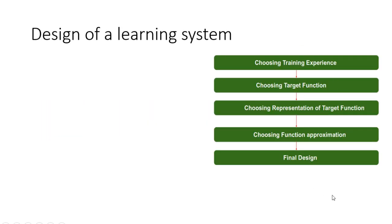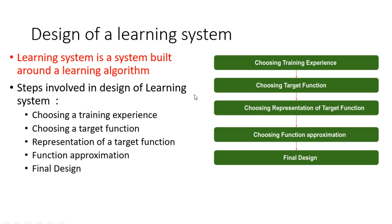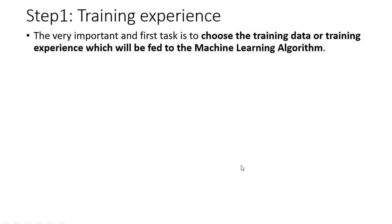These are the steps of designing a learning system. A learning system is built around the learning algorithm. The steps involved are: first, choose the training experience; then choose the target function; choose the representation of a target function; choose the function approximation; and final design. Let's see step one — the training experience.